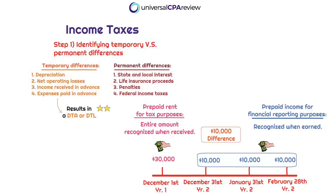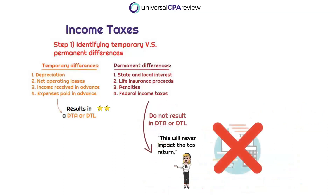Permanent differences are only going to get reported on the books — only on the income statement — but they're not getting reported on the tax return. So if something is getting reported on the books but it's never going into the tax return, this difference is never going to get reversed, so it is permanent. It is not going to result in a deferred tax asset or a deferred tax liability because it's never getting recognized.